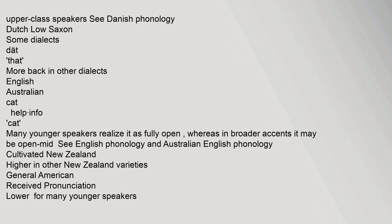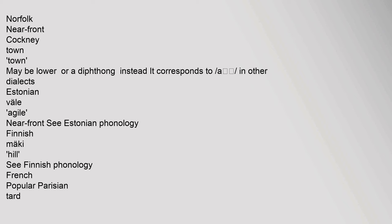English Australian: 'cat'. Norfolk: near-front. Cockney/town: may be lower or a diphthong instead; it corresponds to /a/ in other dialects. Estonian: 'veil' — near-front; see Estonian phonology. Finnish: 'mäki'; see Finnish phonology. French popular Parisian: 'tard' (late); see French phonology. Québec: 'vieux'.